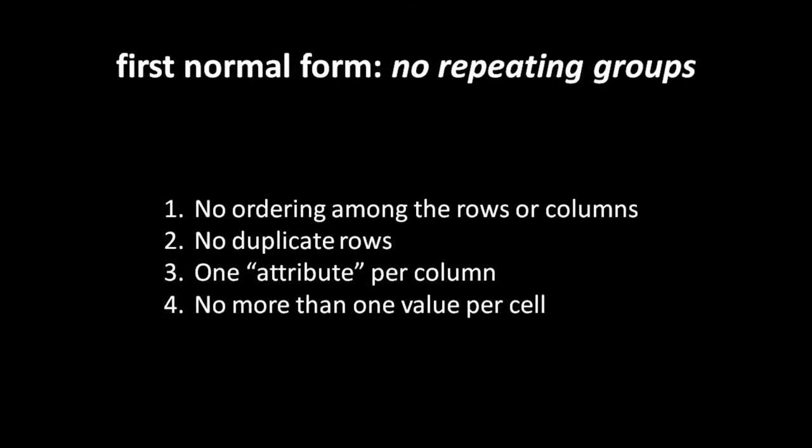The first normal form is the easiest to state: no repeating groups. Tables should not have repeating groups. There's some disagreement about competing interpretations, but at minimum it means there should be no ordering among the rows or columns in your table. In practice, when you insert data row by row, understand that the database is not maintaining that order - so when you do a query later, you're not going to get back the data in the same order.